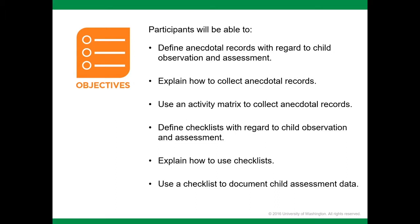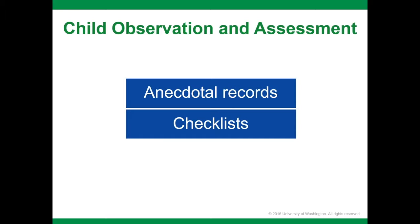During this session, you will be able to define anecdotal records with regard to child observation and assessment, explain how to use a checklist, and use a checklist to document child assessment data. There are a number of different ways to collect information about what you see and hear children doing: anecdotal records, checklists, work samples, and video. In these first two sessions, you'll learn about using anecdotal records and checklists to record your observations and how to analyze and understand the information gathered.